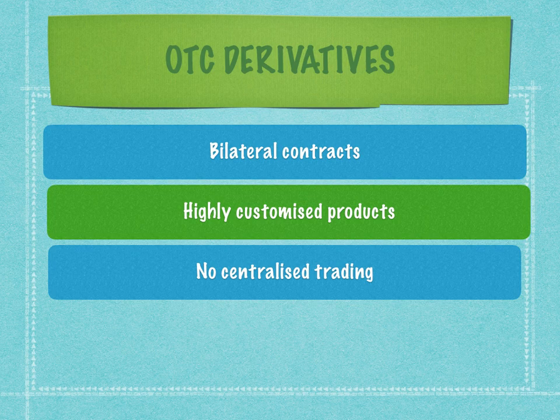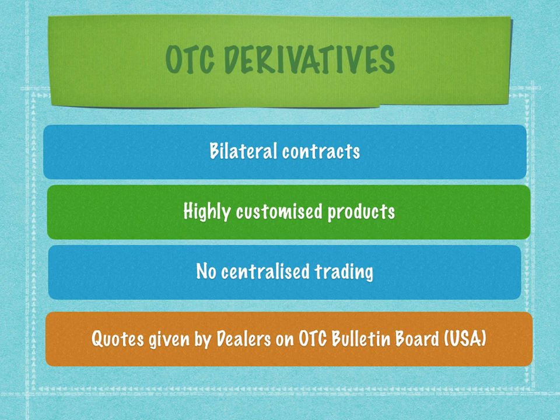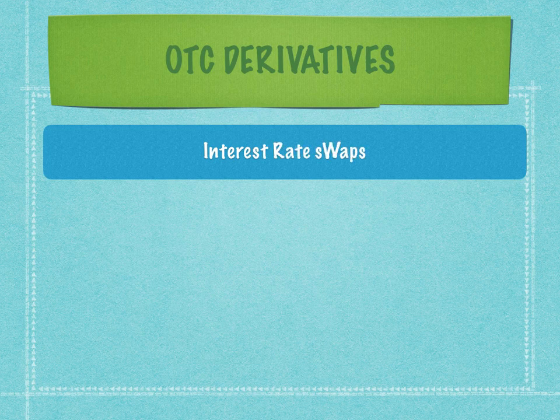For exchange-listed securities, anyone can download an app and view prices. But how do we know the price of OTC derivatives? In the US market, quotes are given by dealers on the OTC Bulletin Board (OTCBB), provided by FINRA. Because OTC products are extremely structured and customized to meet the requirements of the two counterparties, counterparty risk can be high. Therefore, OTC derivatives now have a stricter and more stringent regulatory framework.